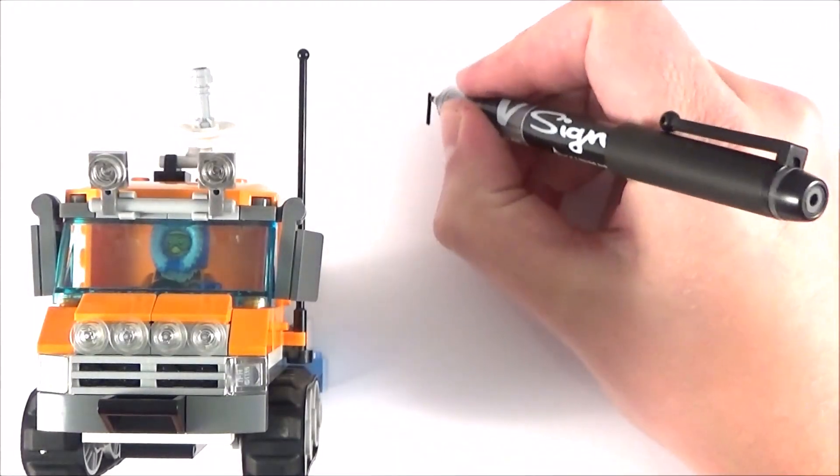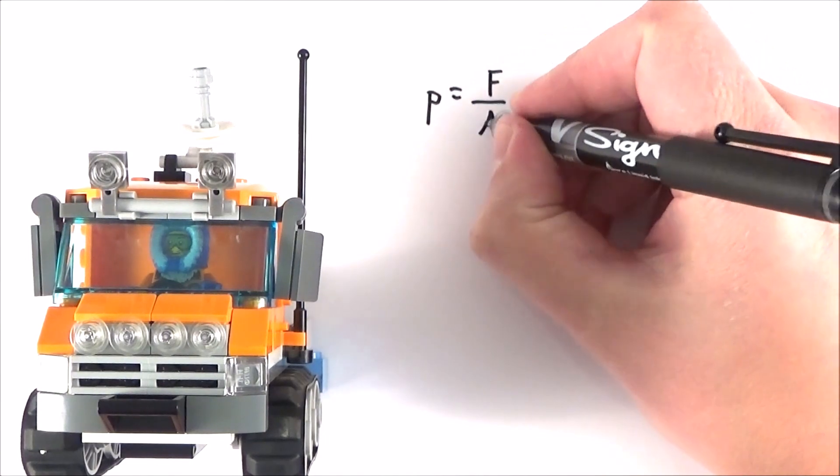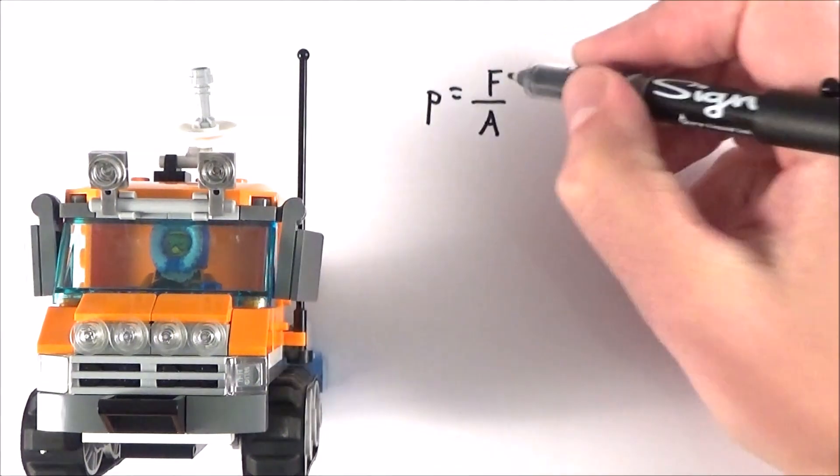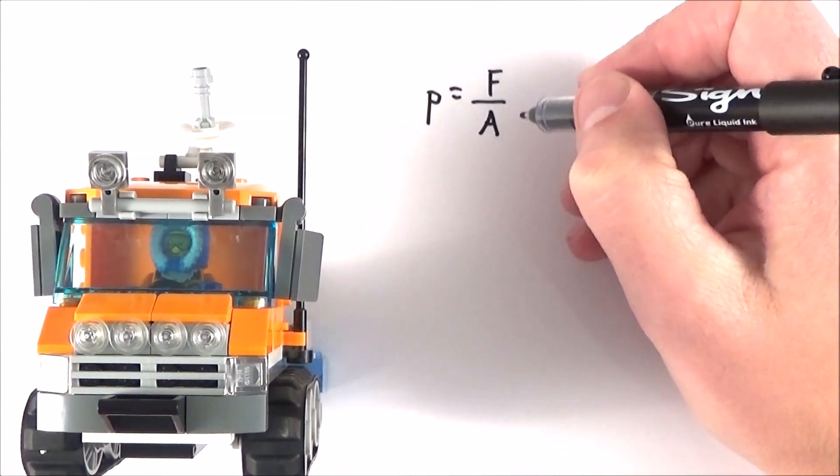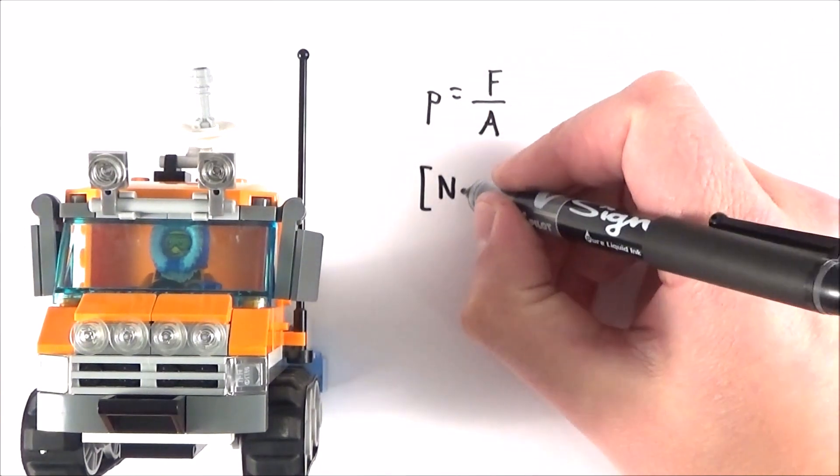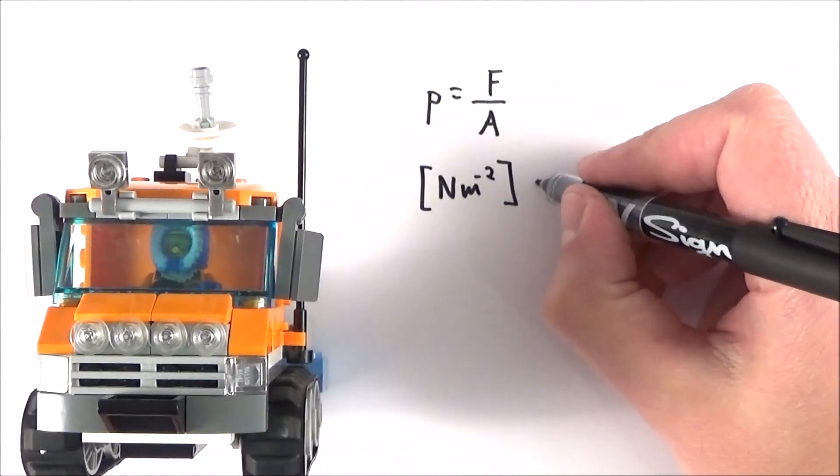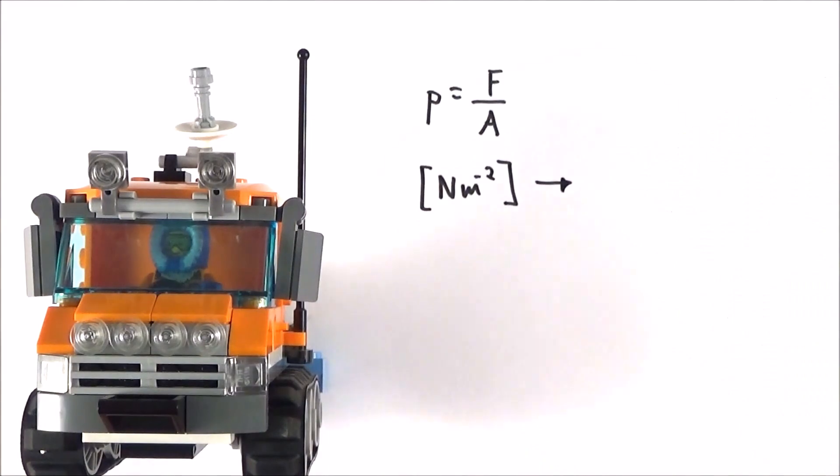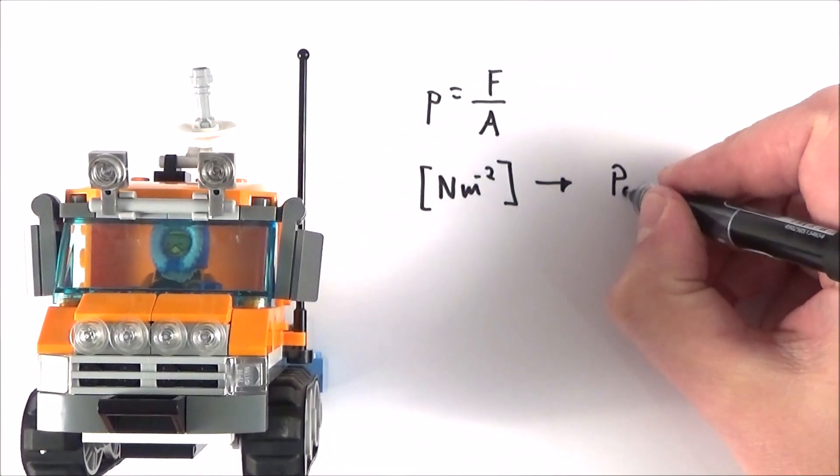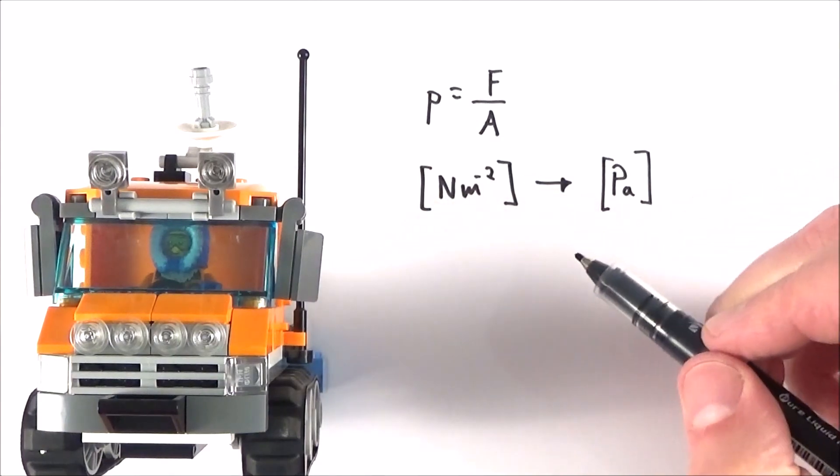So, pressure has the symbol little p and it's equal to the force per unit area. In terms of units, because we measure force in newtons and area in square meters, we can give this the units of newtons per square meter, which is perfectly acceptable. But also, we can measure the pressure of something in its own unit, which we call a pascal. And one pascal is one newton per square meter.